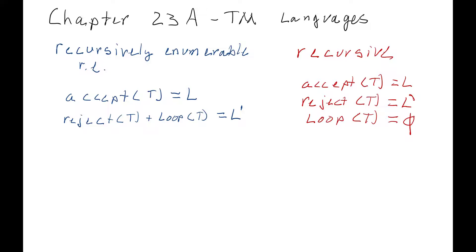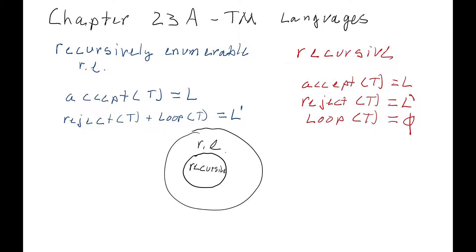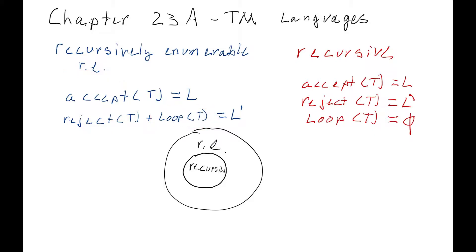So we have these two classes of languages: recursively enumerable and recursive. Hopefully you can see that all recursive languages by definition are also recursively enumerable, because a recursive machine rejects all the words that are not in the language, which meets the recursively enumerable definition. It's not like it has to loop forever to be recursively enumerable — it just can loop forever on some of the words. So all recursive languages are also recursively enumerable.